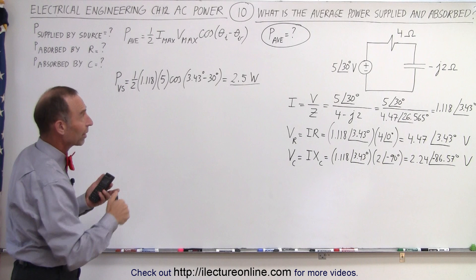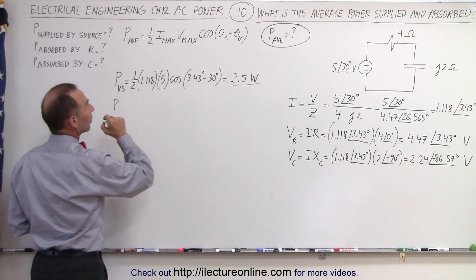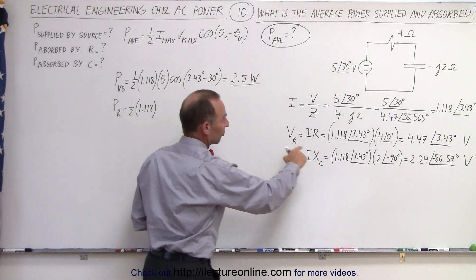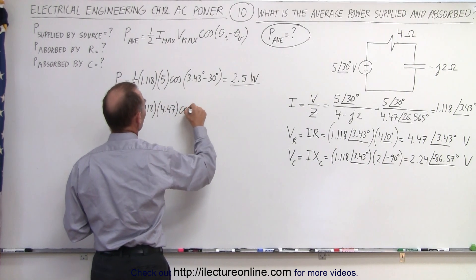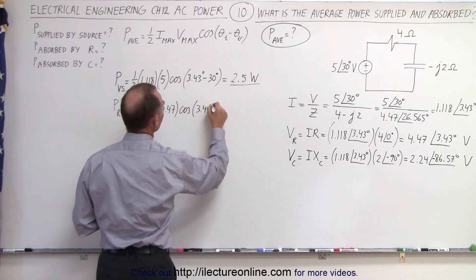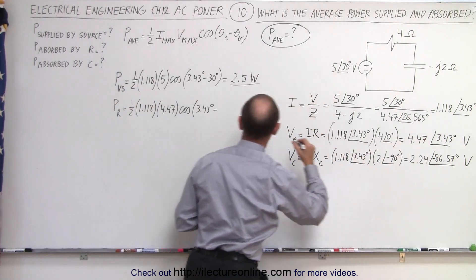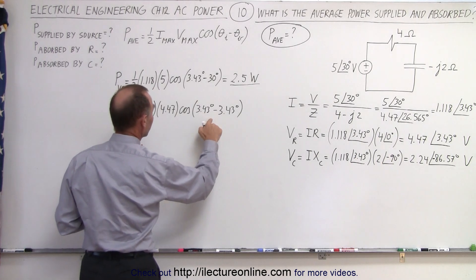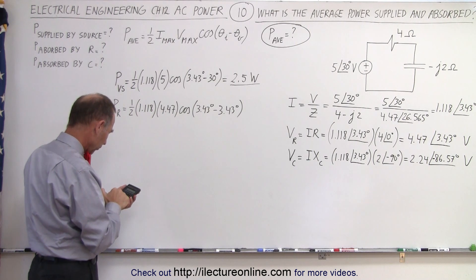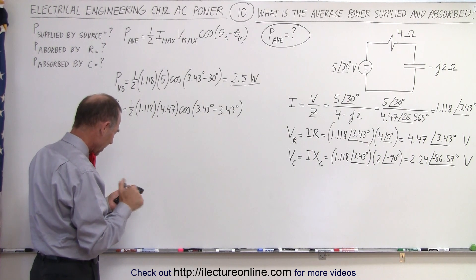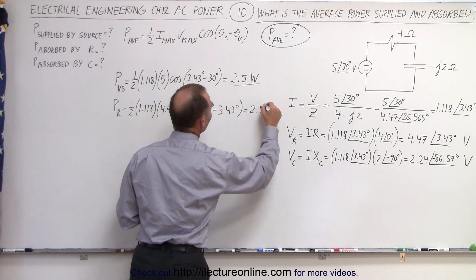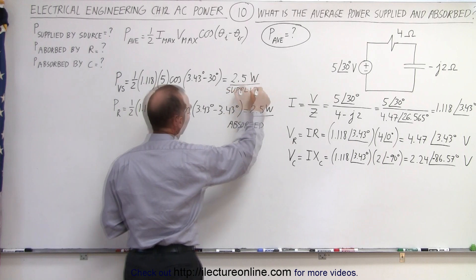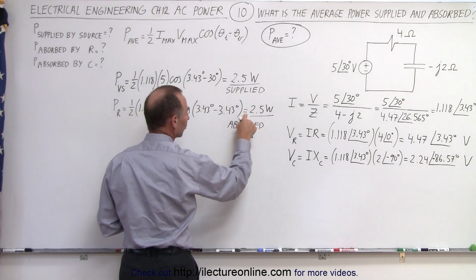Now we find the power absorbed by the resistor. Power absorbed by the resistor is equal to 0.5 times the current, 1.118, times the voltage across the resistor, 4.47, times the cosine of 3.43 minus 3.43 degrees. Since both current and voltage across the resistor share the same phase angle, that's the cosine of 0 degrees, which is 1. So we have 4.47 times 1.118 times 0.5, which equals 2.5 watts — absorbed by the resistor.